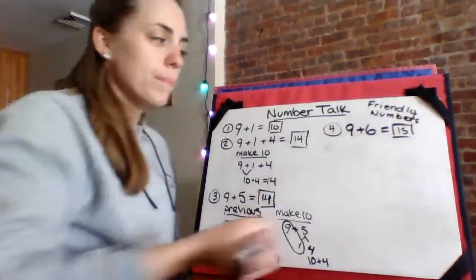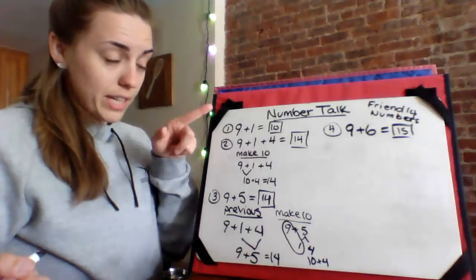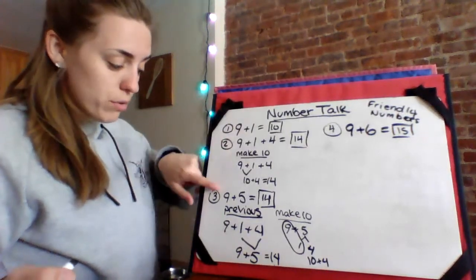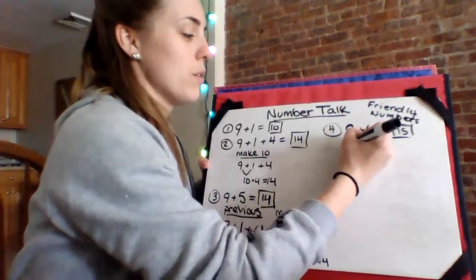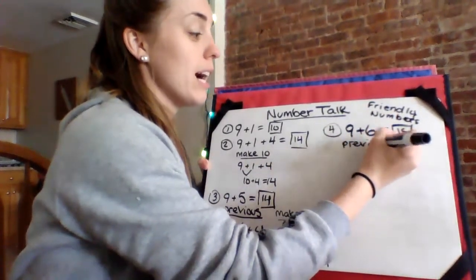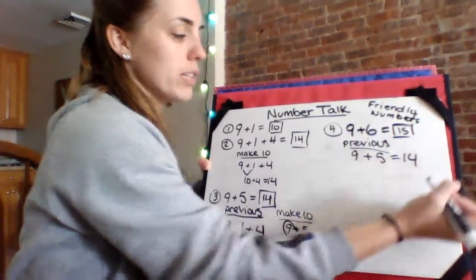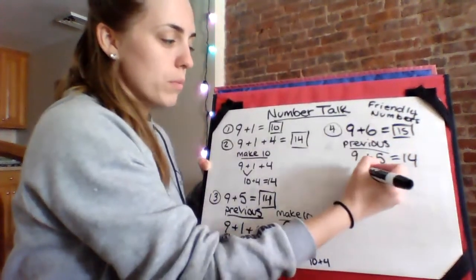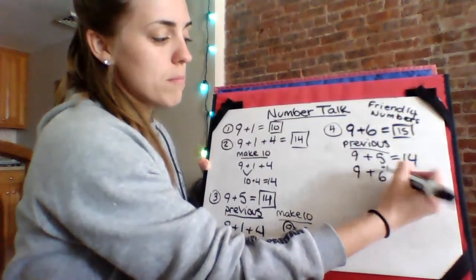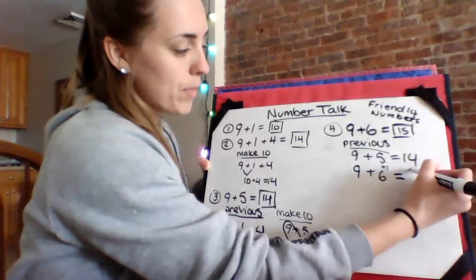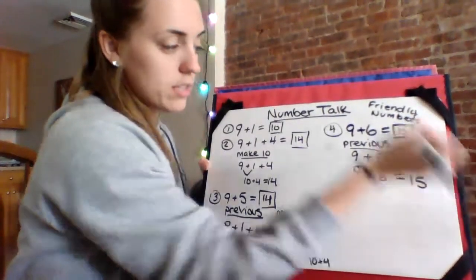Awesome. How'd you guys get fifteen? There are two ways that I see that we could get fifteen. Could we have used our previous one to help us? We could use the previous one because that one was nine plus five, and we knew that made fourteen. And this problem was nine plus six, and we know six is just one more than five. So one more to fourteen is fifteen.